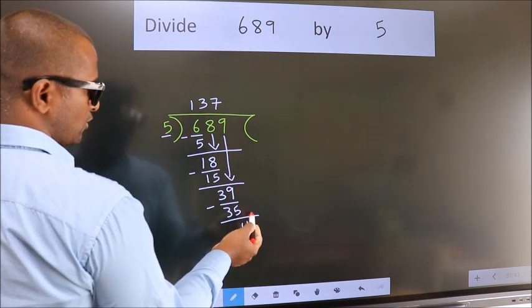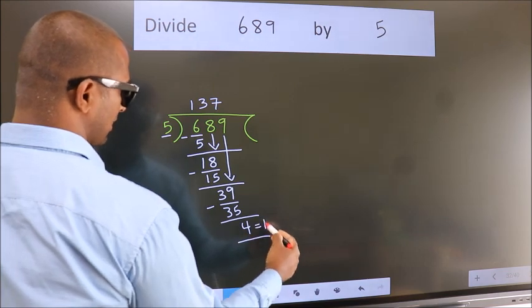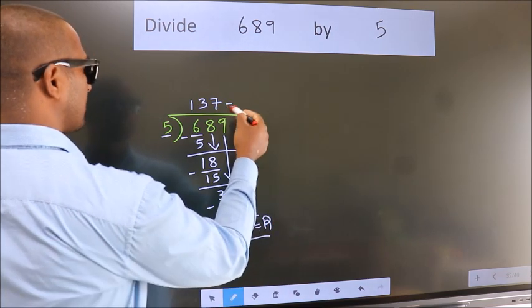No more numbers to bring it down. So, we stop here. This is our remainder. This is our quotient.